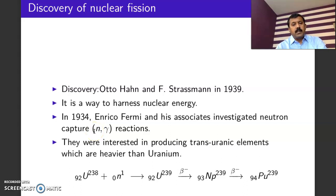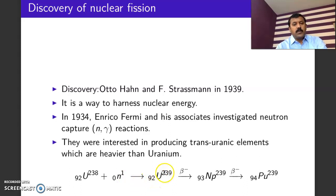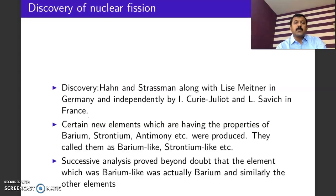Their intention was to produce transuranic elements. When uranium-238 is bombarded with a neutron, they expected to produce the uranium isotope uranium-239, which is highly unstable and readily undergoes beta decay to produce neptunium, which in turn undergoes beta decay to produce plutonium. This was their expectation, but they failed to produce this process.